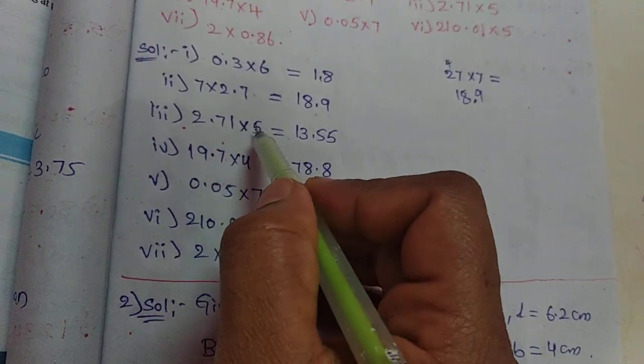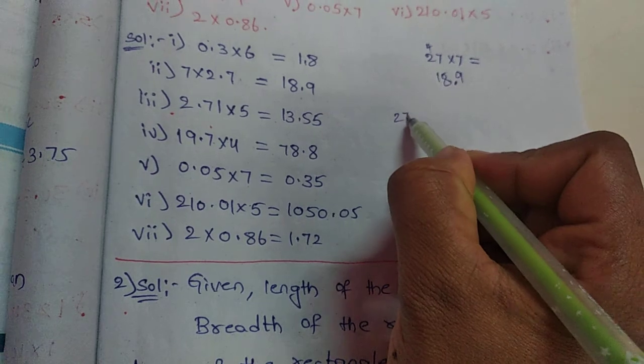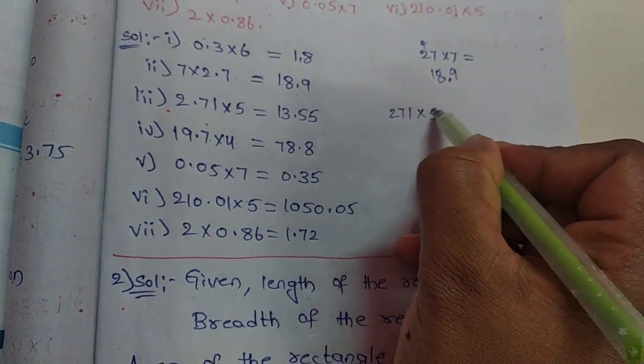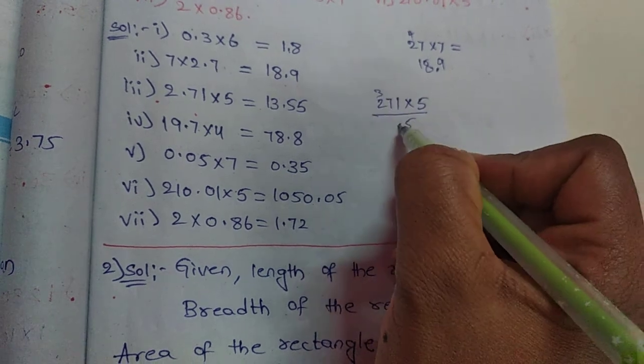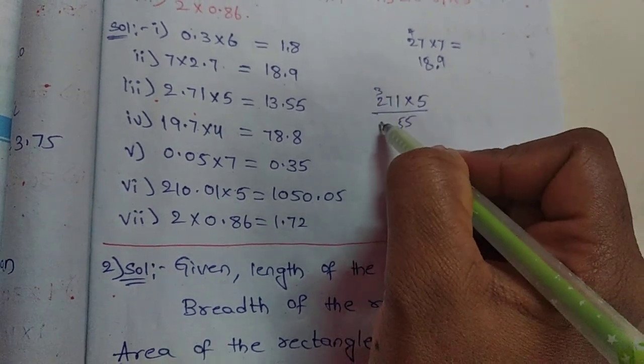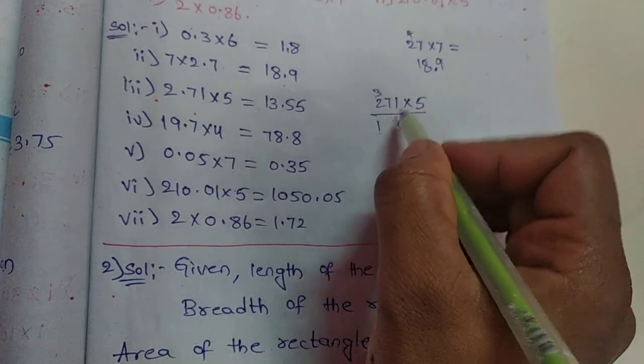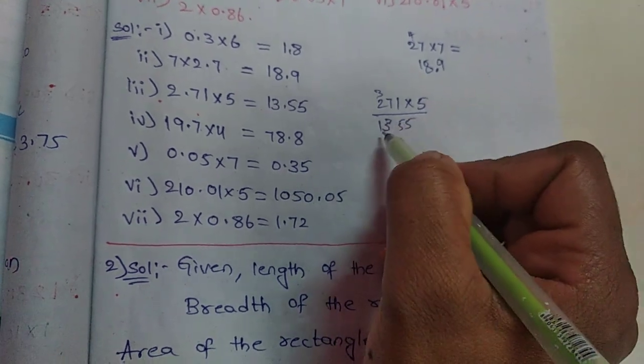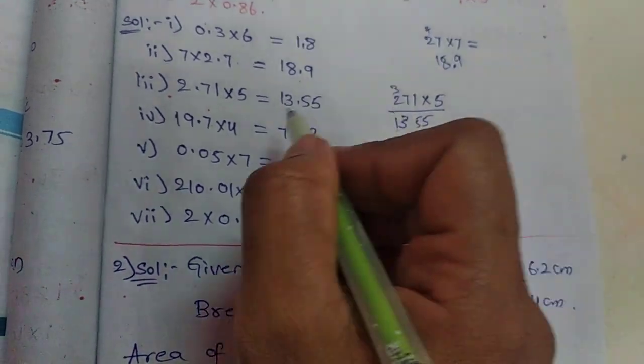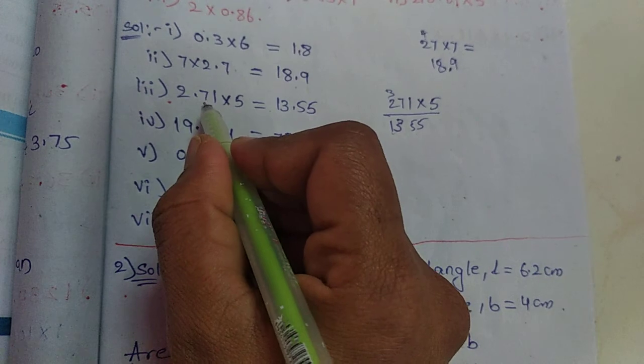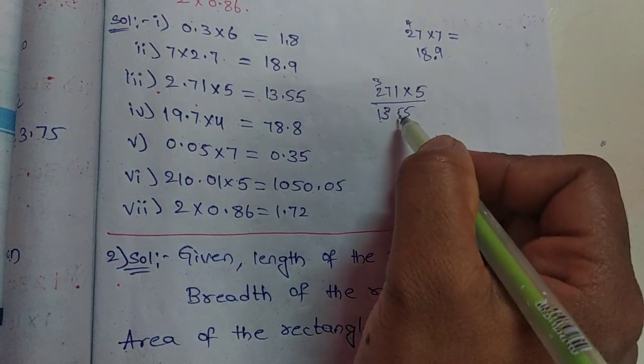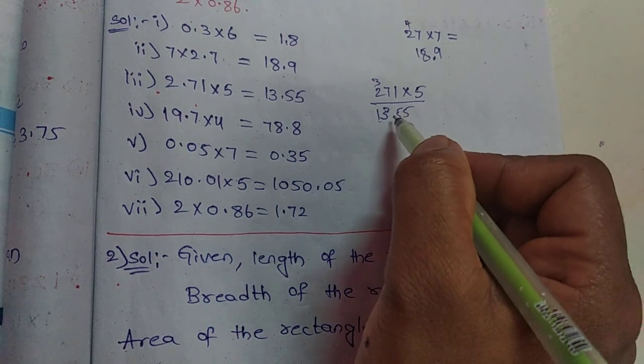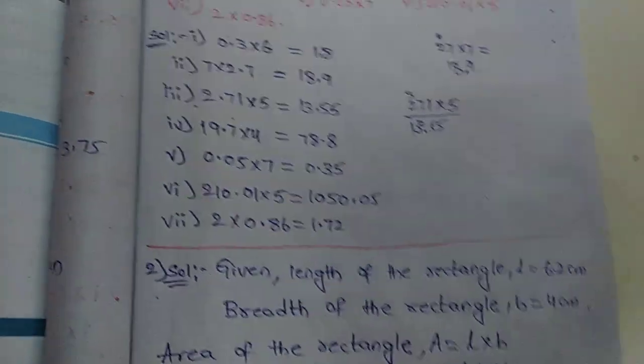Next, 2.71 into 5. First, 2.71 is the number. 5 times 1 is 5, 5 times 7 is 35, 5 times 2 is 10 plus 3 is 13, so 1355. Here in this one, the point is after two decimal places. So in this also, from the right side we should count two digits: 1, 2. And here we should place that decimal point, 13.55.